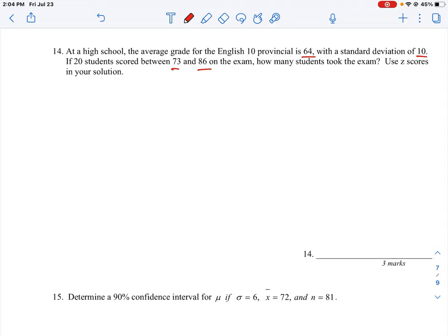So 20 got this score, but we don't know how big the class was, essentially. And then the question here says to use z-scores in your solution. So what we need to do is understand what we're trying to figure out here. Let me just draw a little curve, a statistical curve.